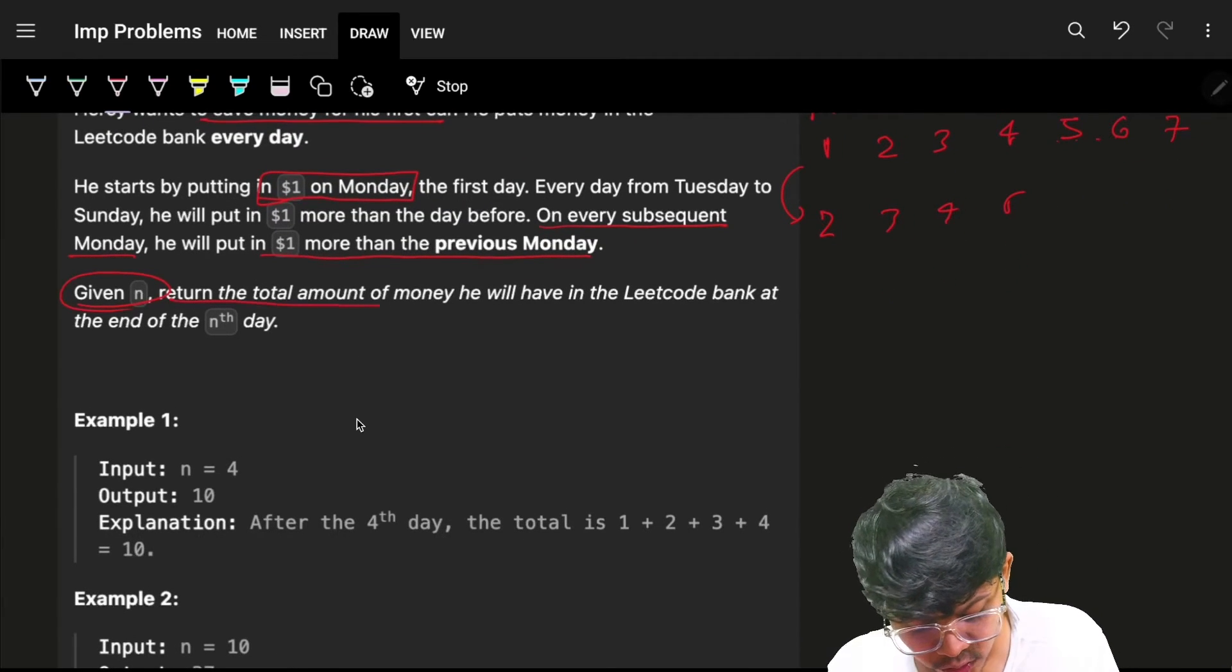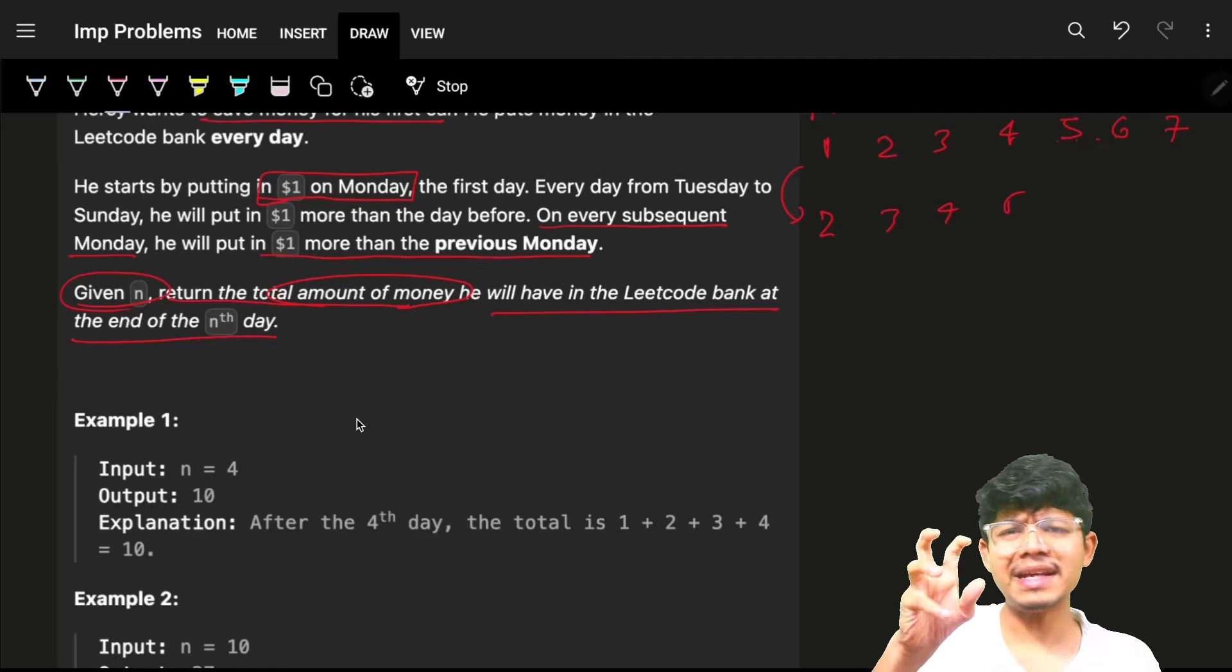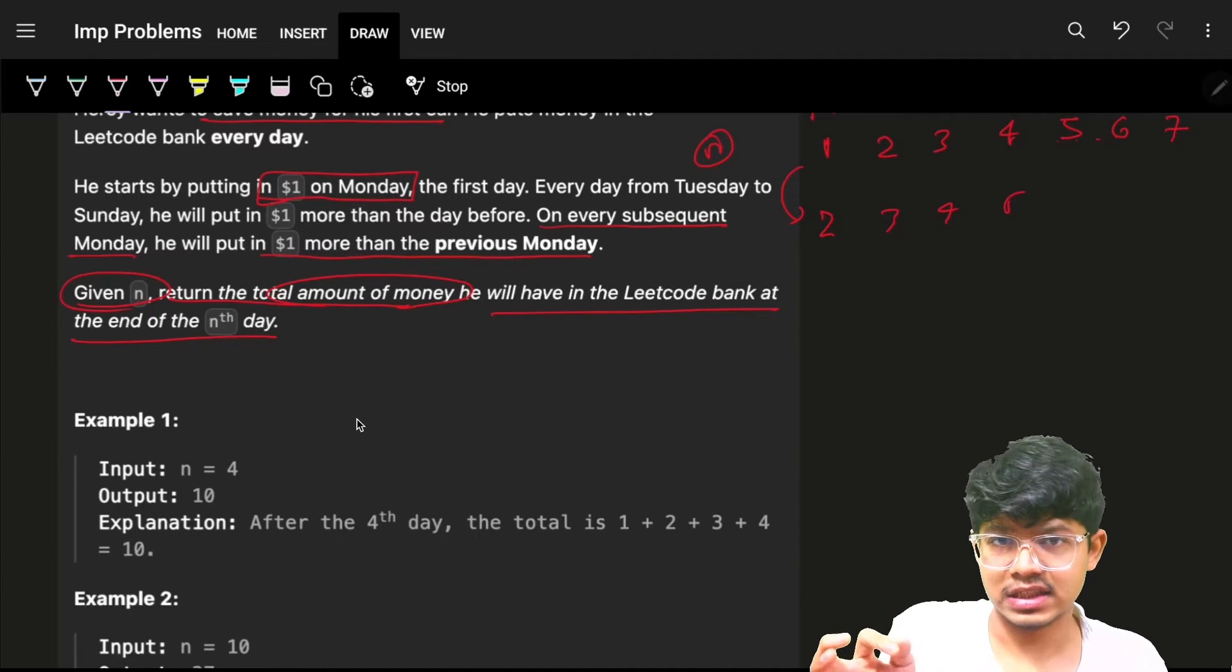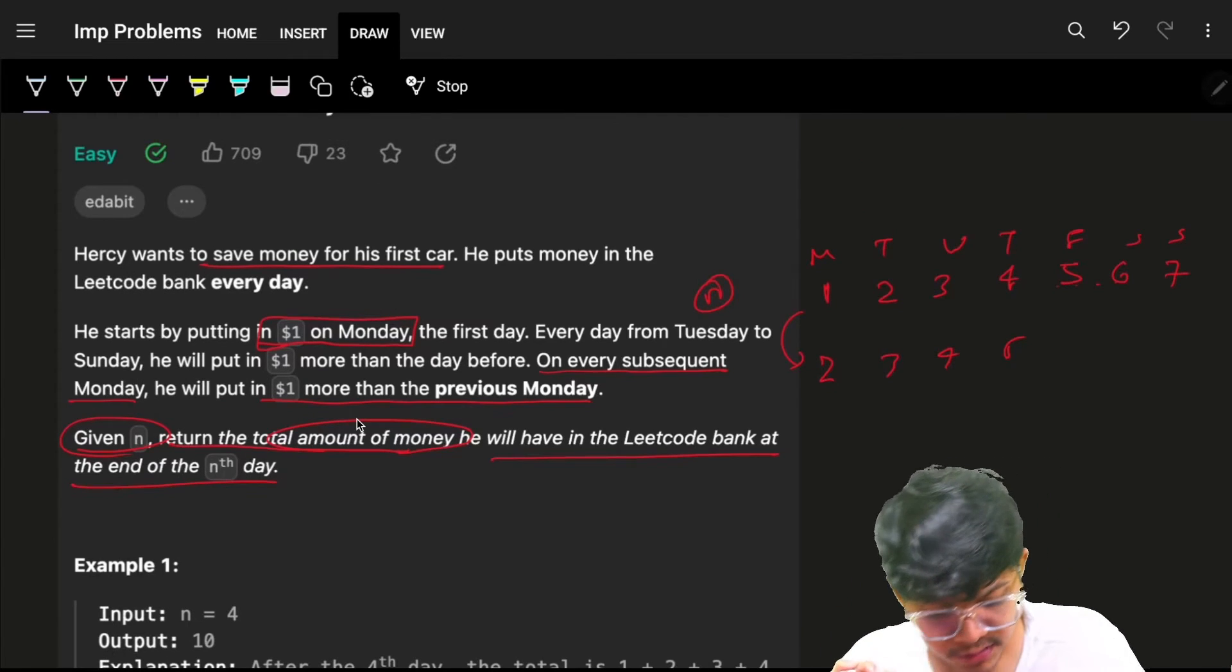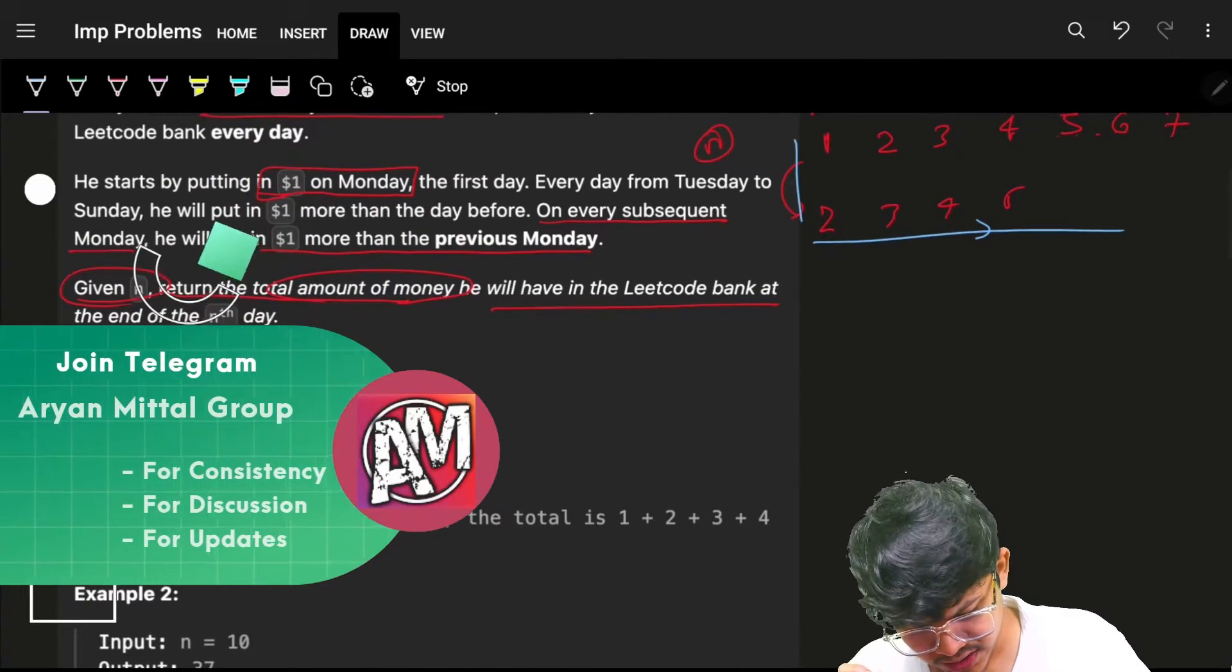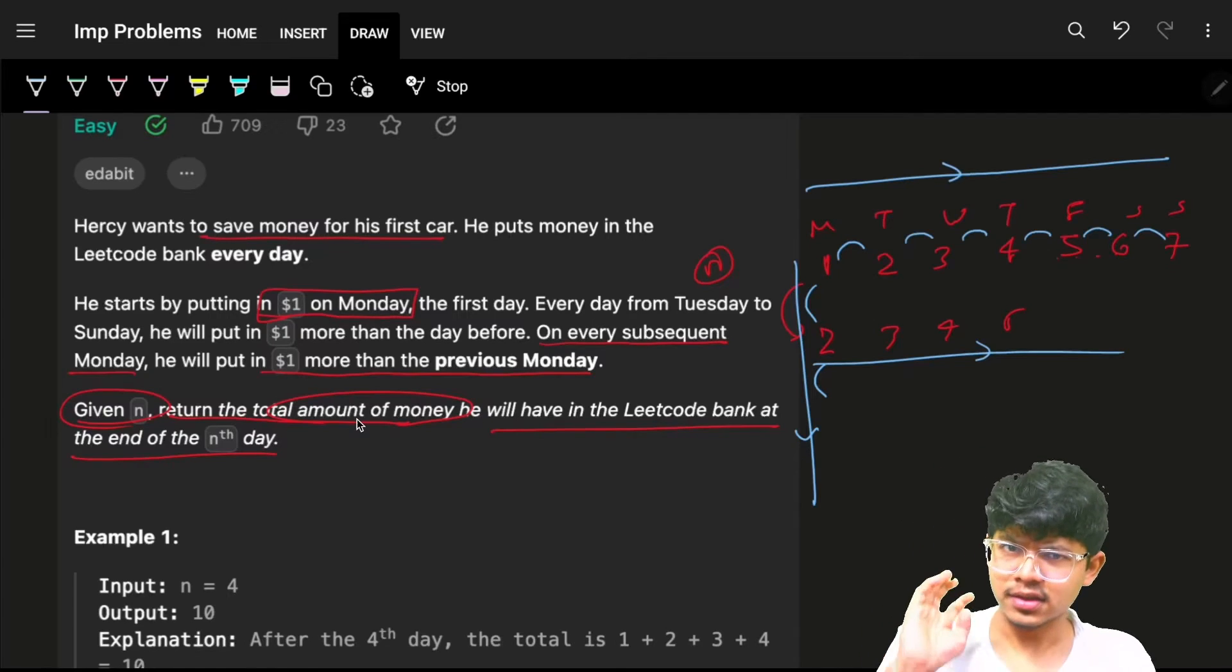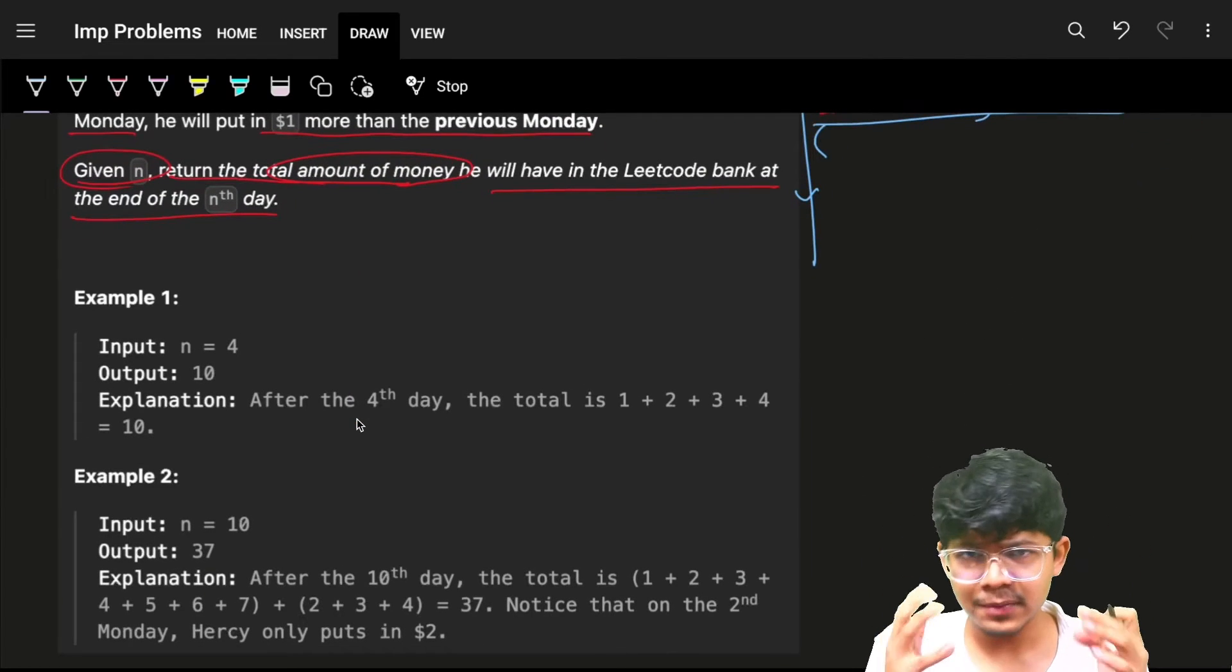Return the total amount of money he will have in the LeetCode bank at the end of N days. So basically, in N days, what is the sum of all these numbers? Now, as in the first glance, we are not going into the most optimal approach, but you can see that the numbers will form a pattern. They are increasing 1, 1, 1. You can see the pattern is being formed. So for sure, something of pattern sort you will apply. It is visible from the naked eye itself.